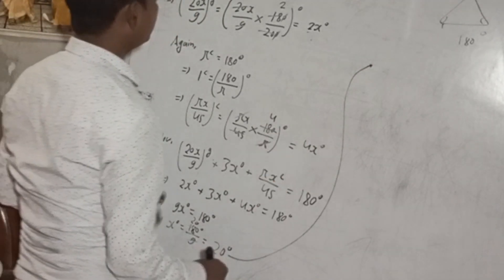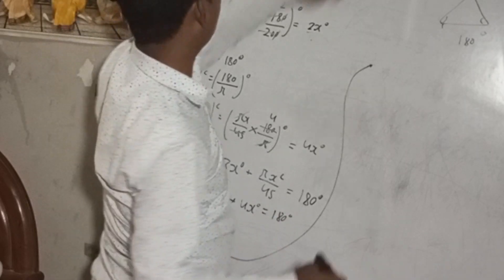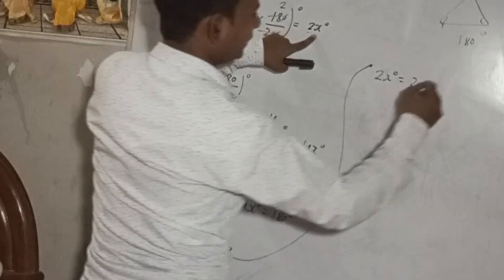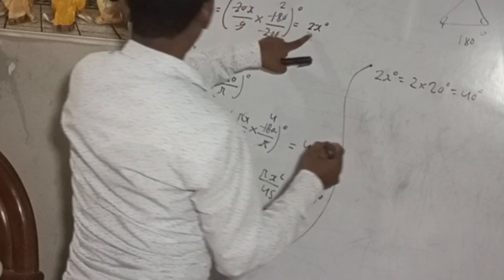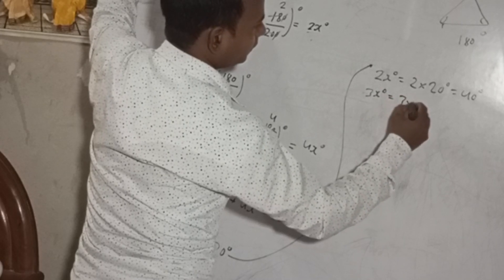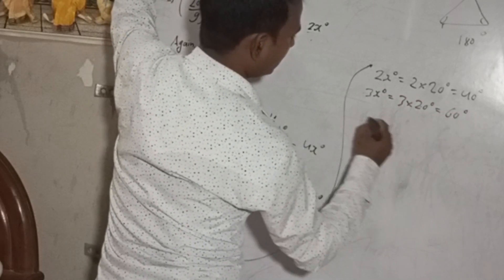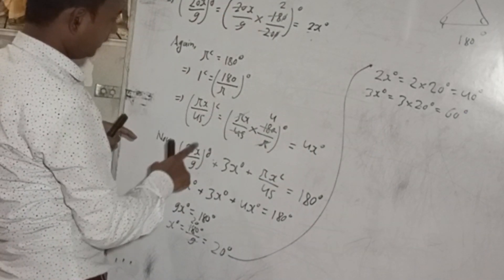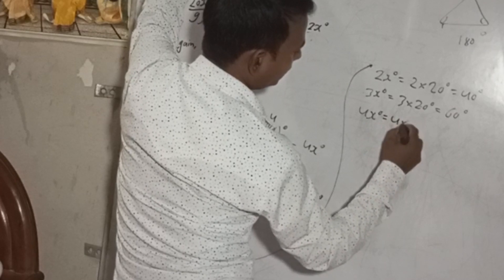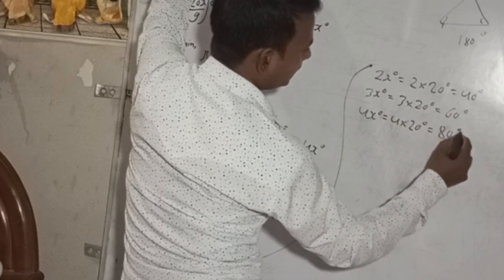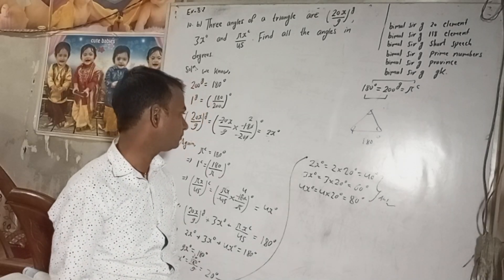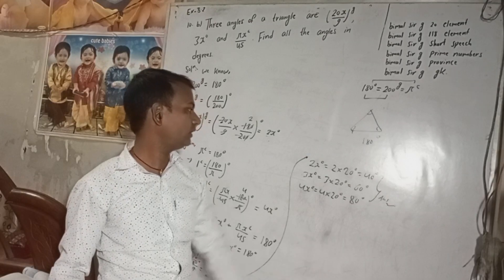Therefore, from here, we got x is this much. Therefore, the first is 2x degree, which is equal to 2 into 20 degree, so this is 40 degree. And second is 3x, which is equal to 3 into 20 degree, so 60 degree. And third is 4x degree, which is equal to 4 into 20 degree, so 80 degree. This is our required solution.